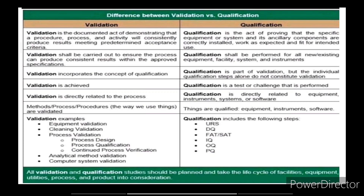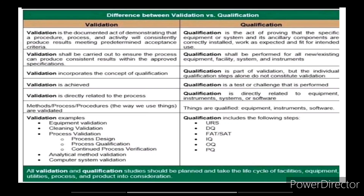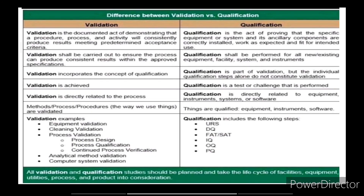So what is the difference between validation and qualification? Validation is the documented act of demonstrating that a procedure, process, and activity will consistently produce results meeting predetermined acceptance criteria. Qualification is the act of proving that specific equipment or system and its ancillary components are correctly installed, work as expected, and are fit for intended use.